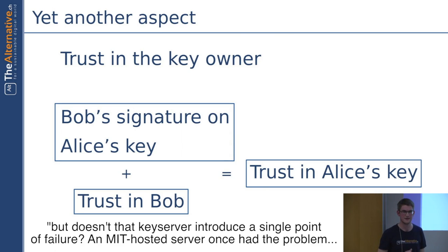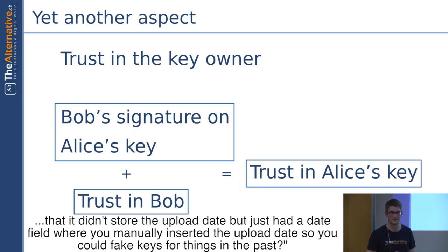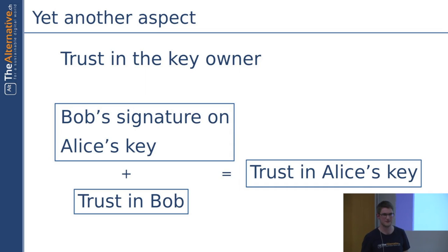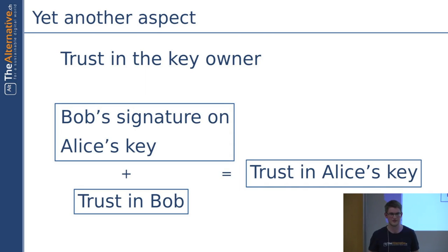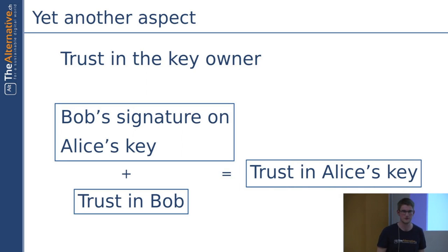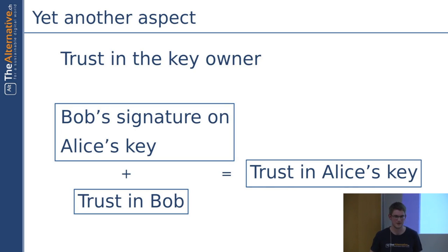Doesn't the key server then introduce a single point of failure? The MIT-hosted key server once had a problem where it didn't record the actual upload date properly, so you could fake keys for things in the past. First of all, there are quite a lot of key servers around so the MIT server is not the only one you can access. GPG has its own key server, and in case they all are down you can still move to sending the key via email. The metadata about when the key was uploaded is not really part of the GPG schema, so you don't need that information even if it's wrong to do the encryption and verification steps.